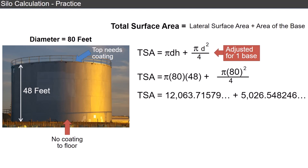When we add those together, we figure the total surface area is equal to 17,090.26404 feet squared, or approximately 17,090 feet squared.